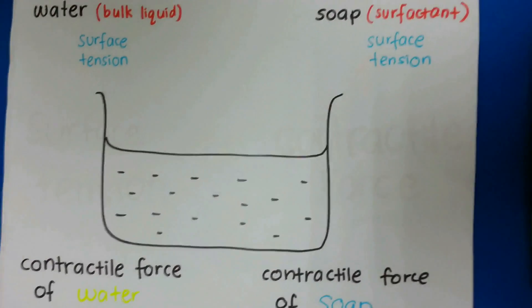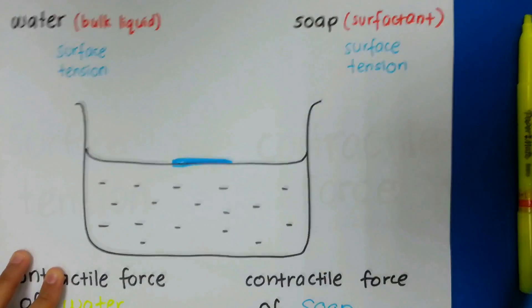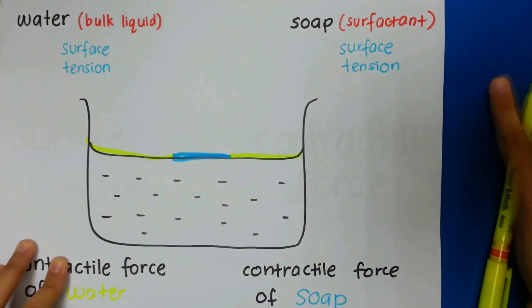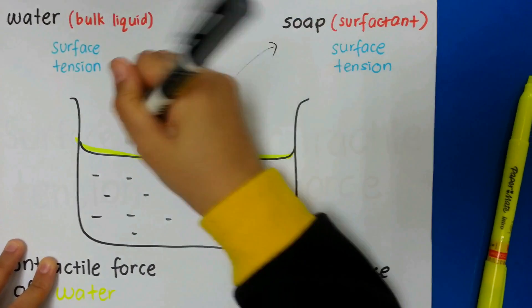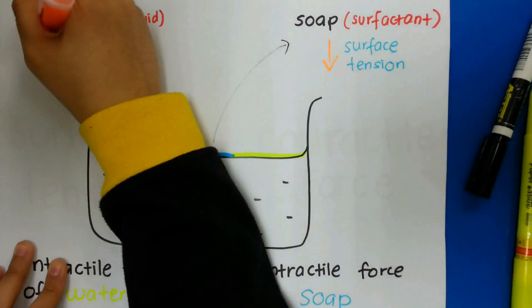The Meringoni effect occurs between two different surface tensions between two liquids. That is, using water and soap as an example, with water being the yellow liquid and soap being the blue liquid. Soap acts as a surfactant with a lower surface tension than water, which acts as a bulk liquid with high surface tension.